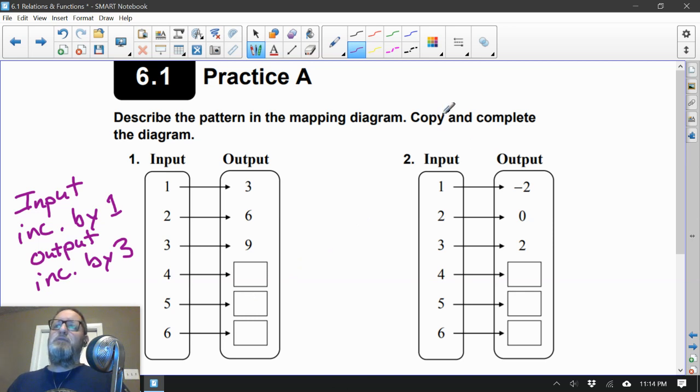So we described our patterns in our input and output. Now we're going to complete the diagram. So 3, 6, 9, 10, 11, 12, 13, 14, 15, 16, 17, 18. There we go. Pretty straightforward. We described our inputs and outputs, and we finished the table.